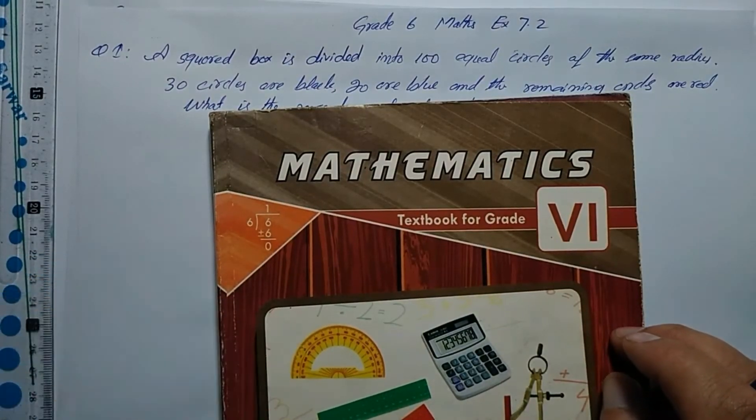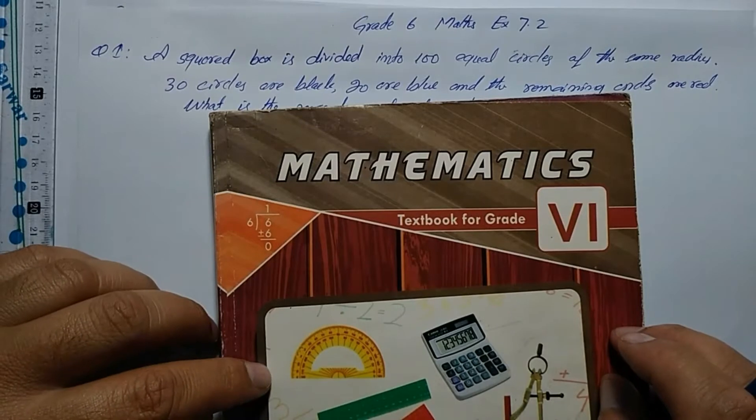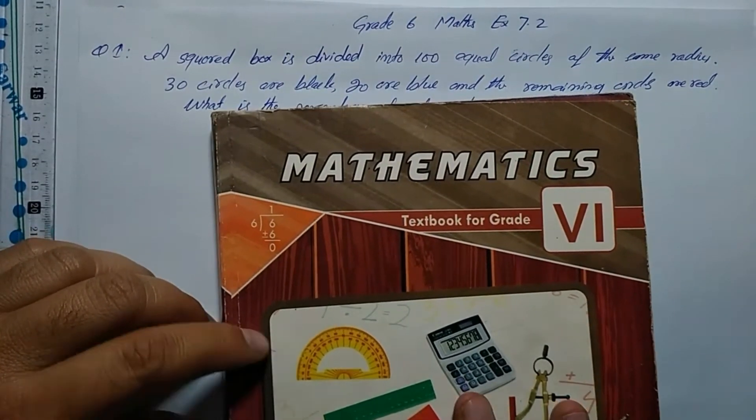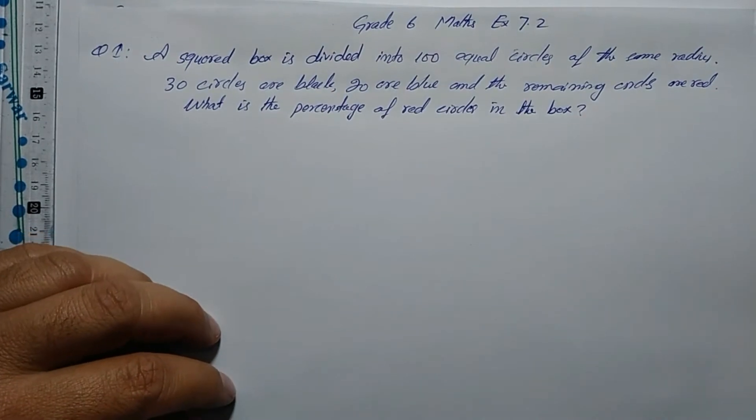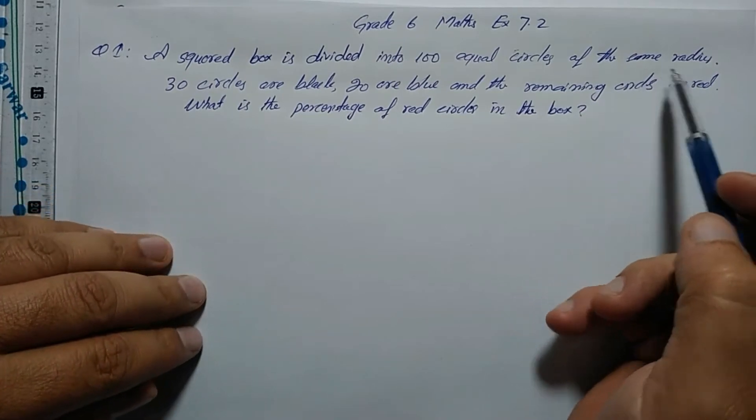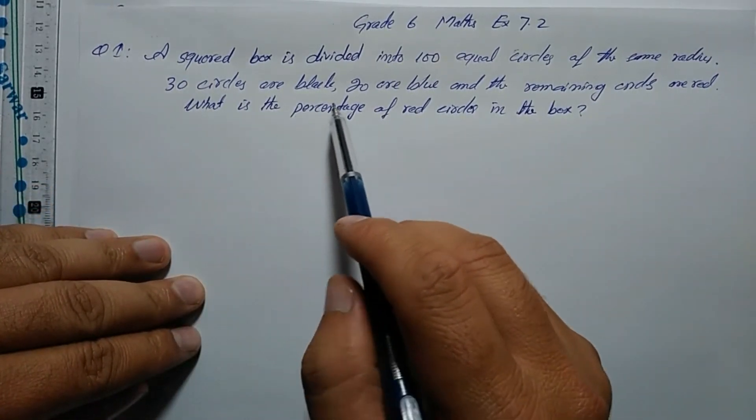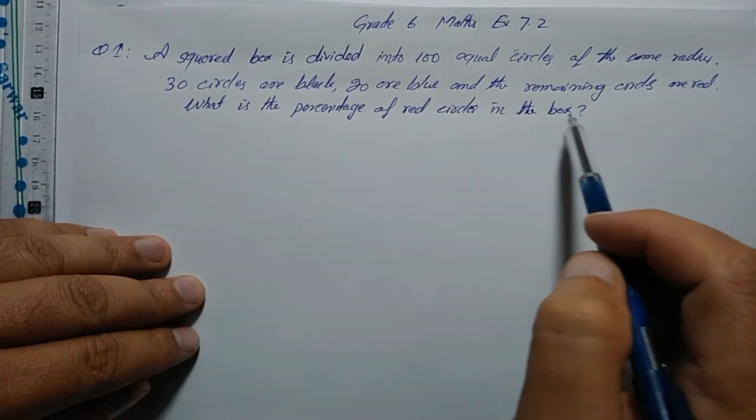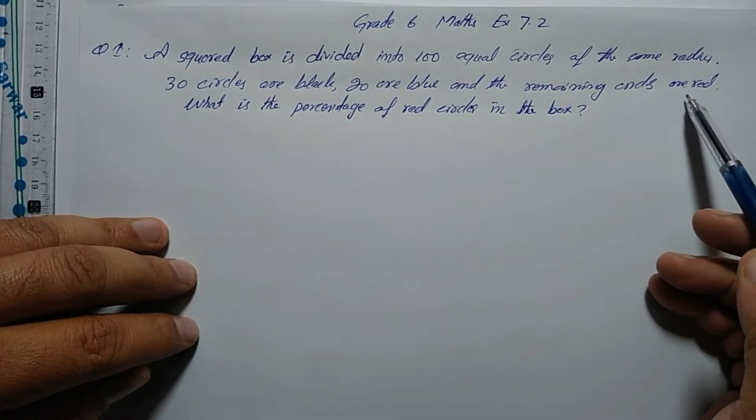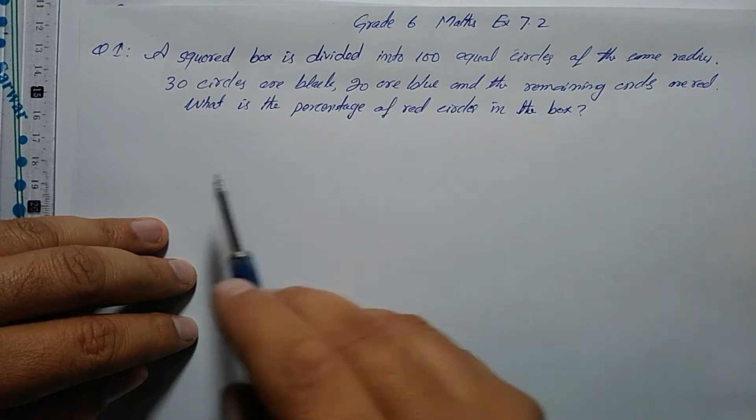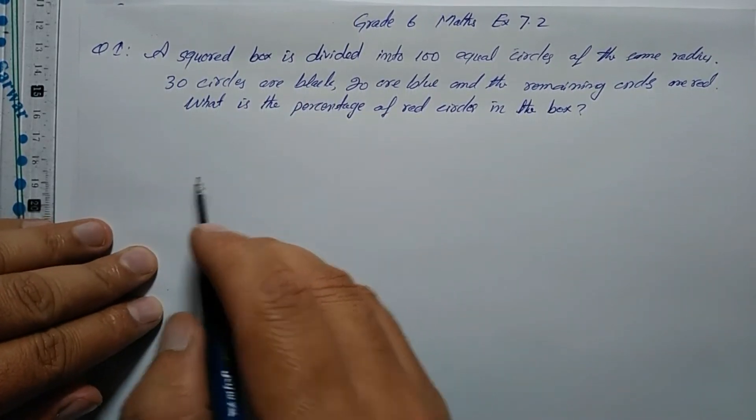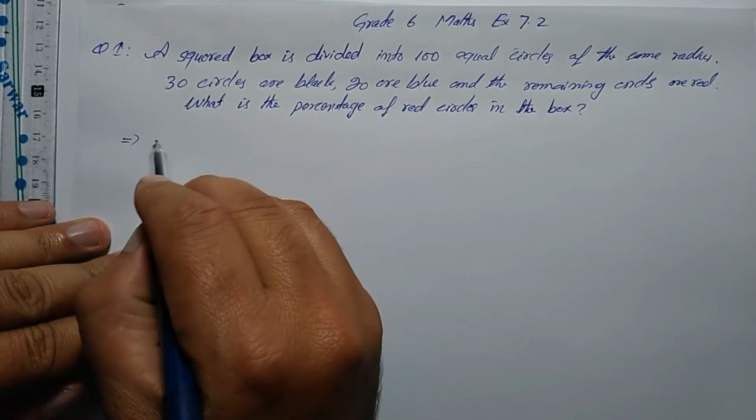Assalamu alaikum. Today we're going to work on Exercise 7.2. Question number 1: A square box is divided into 100 equal circles of the same radius. 30 circles are black, 20 are blue, and the remaining circles are all red.